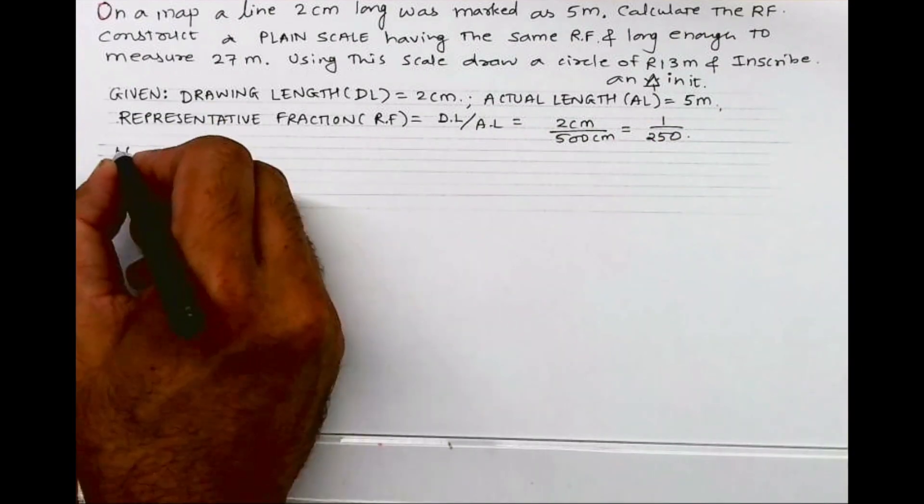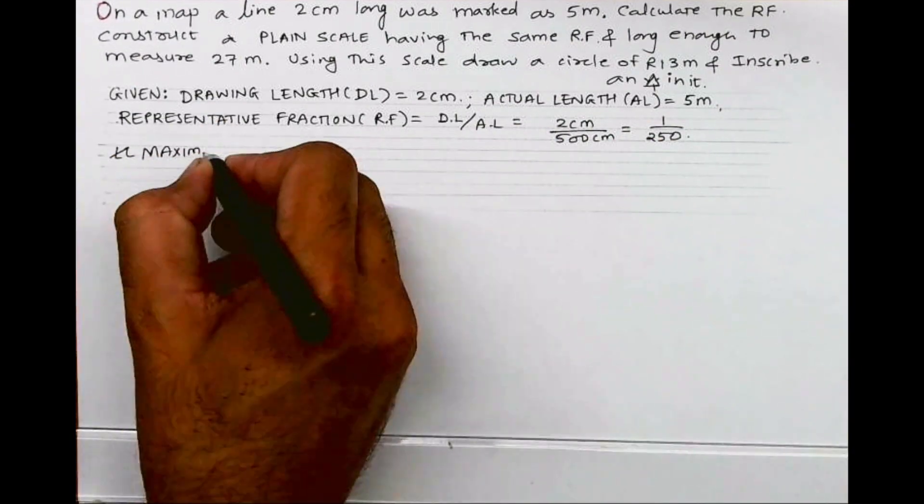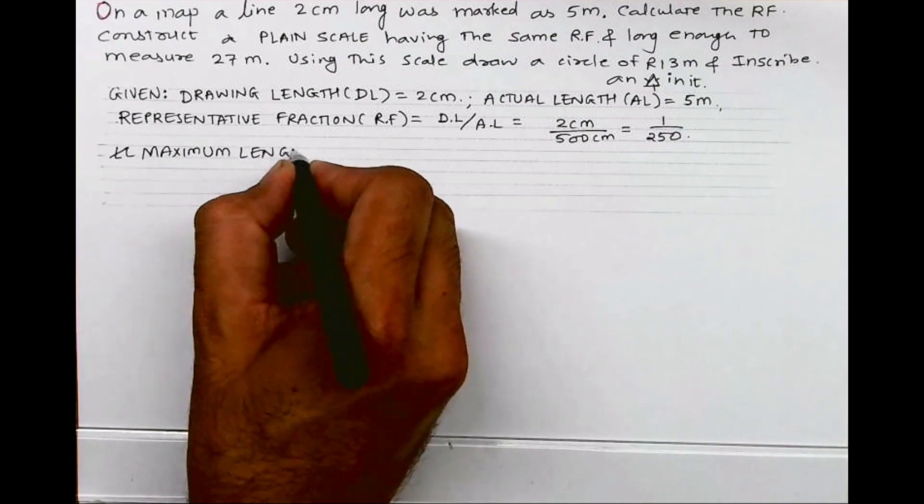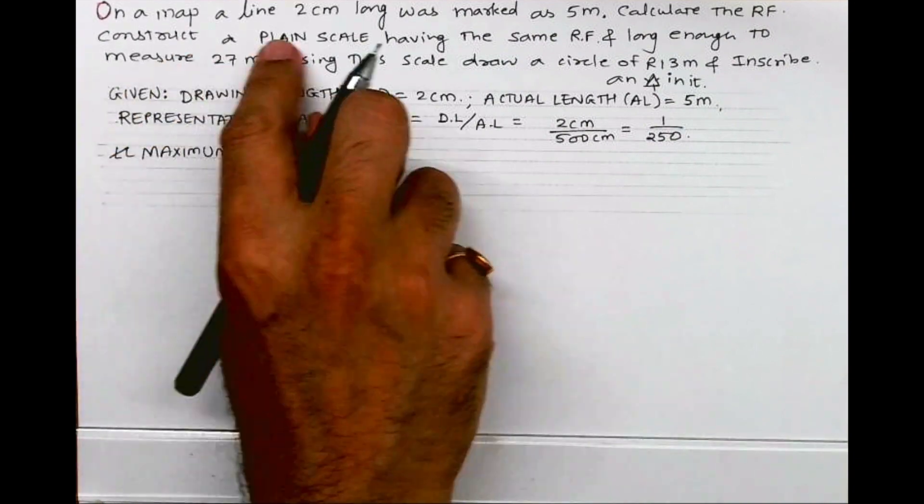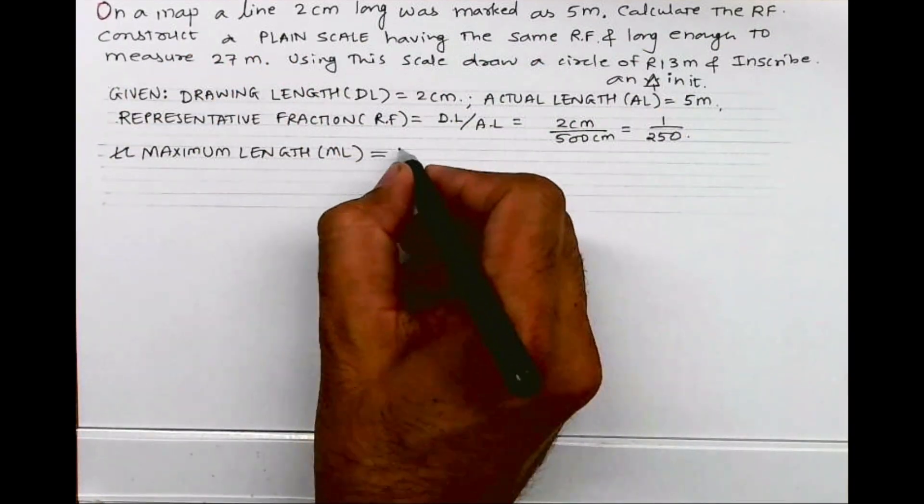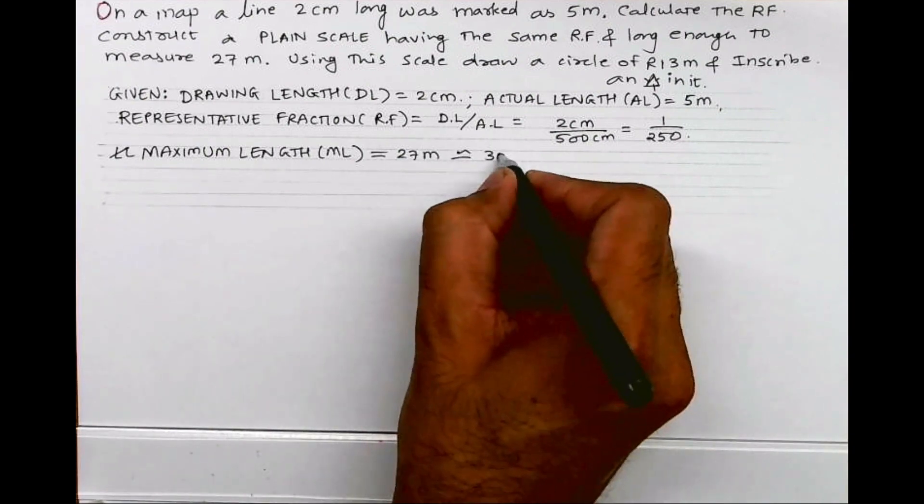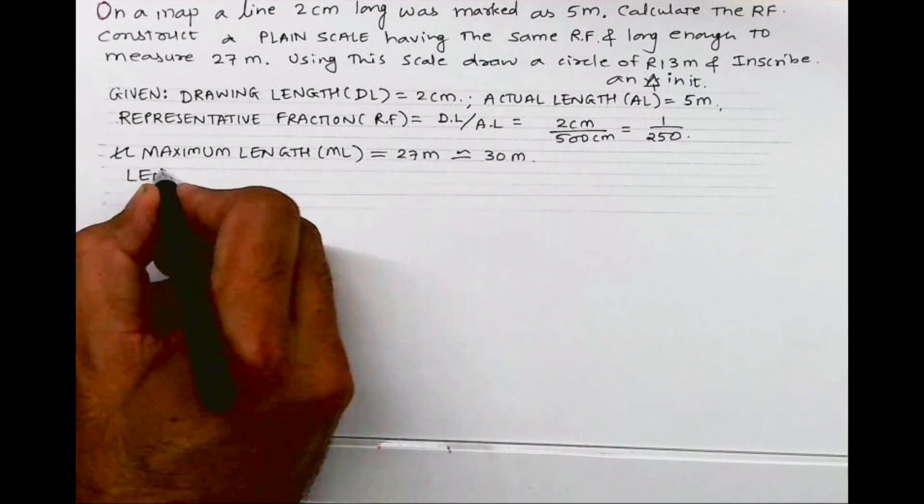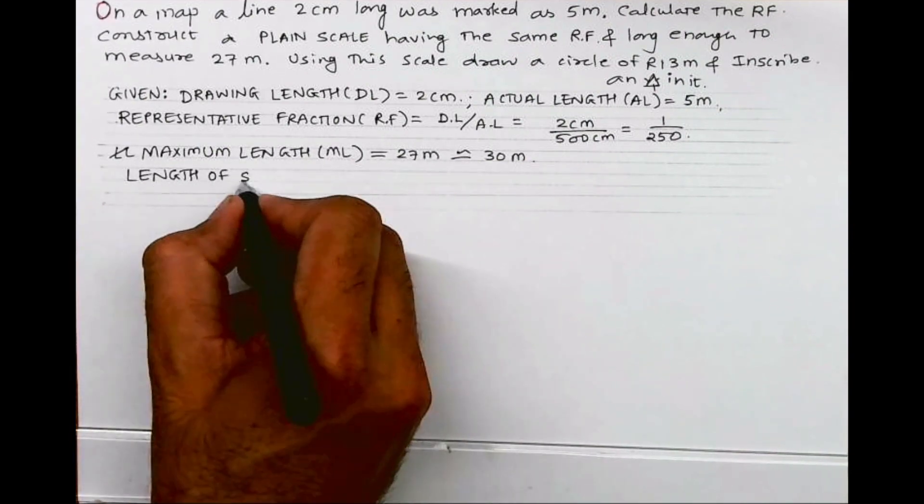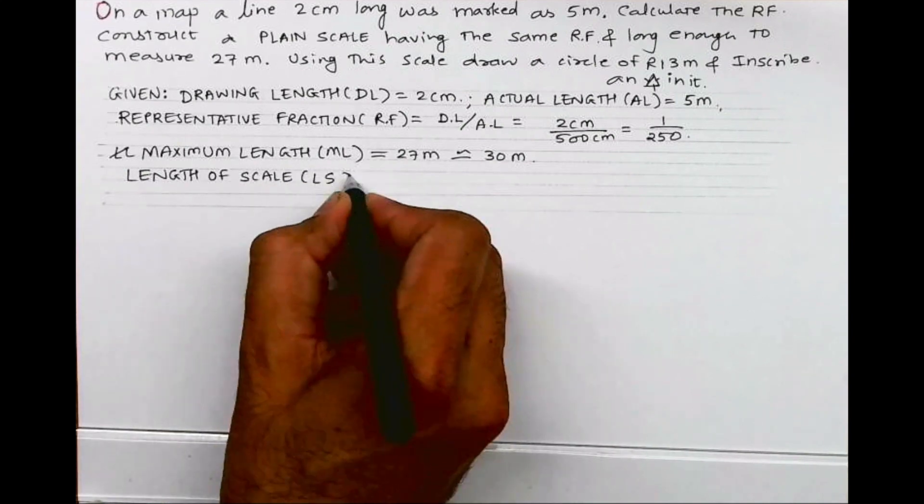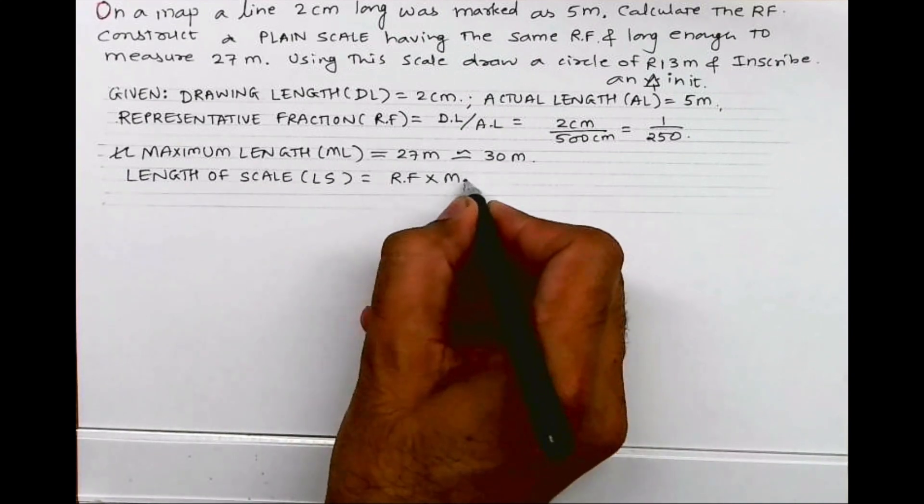Now we have one more information: maximum length. They have mentioned long enough to measure up to 27 m. So I will round off to 30 because we need to divide it into 3 parts. The formula is length of scale, LS equals RF into ML.